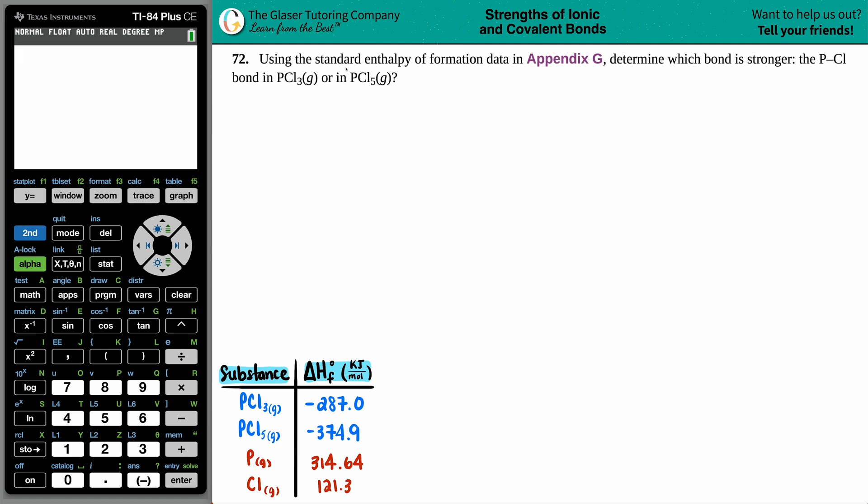Number 72: Using the standard enthalpy of formation data in Appendix G to determine which bond is stronger - the P-Cl bond in PCl3 gas or in PCl5 gas. We can only use standard enthalpy values to figure out this problem.